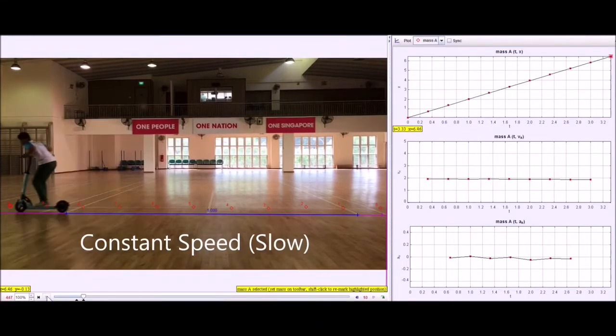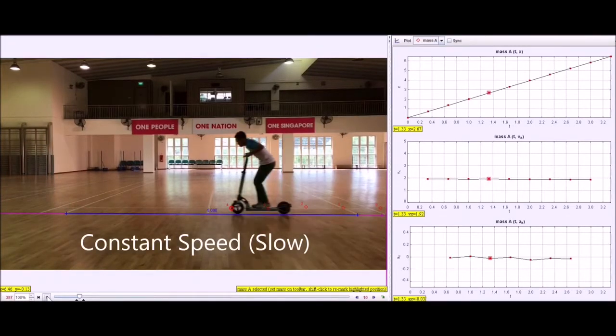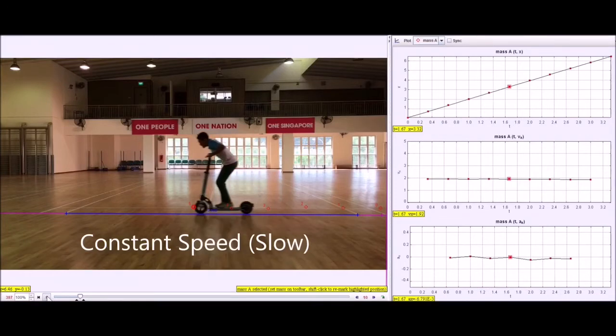You can see that the distance-time graph at the top is a straight diagonal line. This means it has a constant gradient. The gradient of a distance-time graph is the speed. Therefore, this shows that Anik is moving at a constant speed.